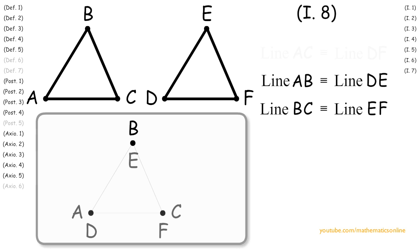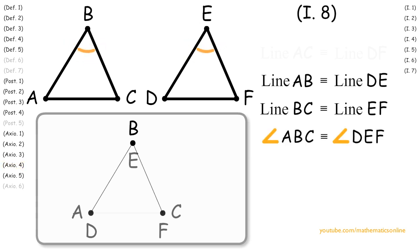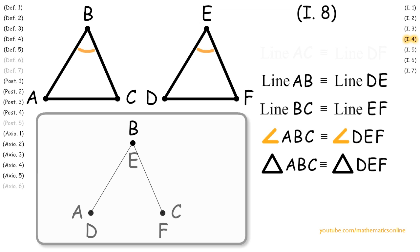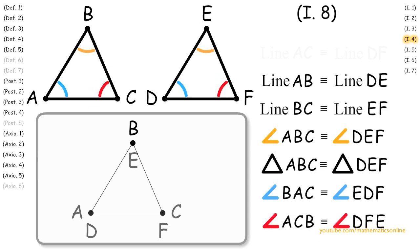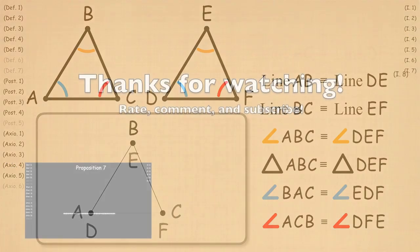So now we know that points A, B, and C coincide with the points D, E, and F respectively. Then by Axiom 4, angle ABC is congruent to angle DEF. Now since both triangles share a corresponding side, angle, and side, then by Proposition 4, triangle ABC is congruent to triangle DEF, angle BAC is congruent to angle EDF, and angle ACB is congruent to angle DFE.